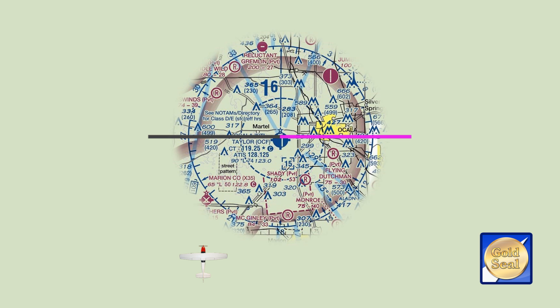The radial is the course line. The bearing is your airplane's track. Don't confuse the two.